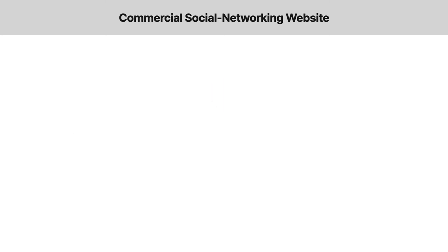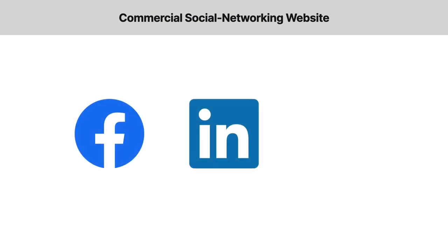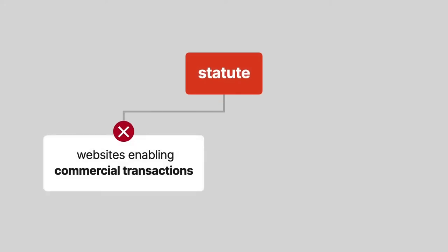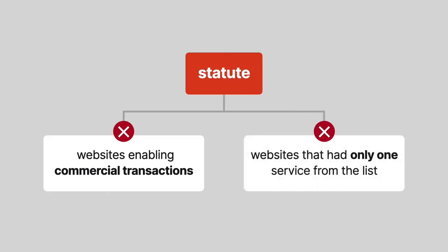Common examples of sites satisfying these criteria include Facebook, LinkedIn, and Twitter. The statute didn't include websites with the primary purpose of enabling commercial transactions between members and site visitors, or sites that had only one service from the categories of photo sharing, email, instant messaging, or chat room and message board platforms.